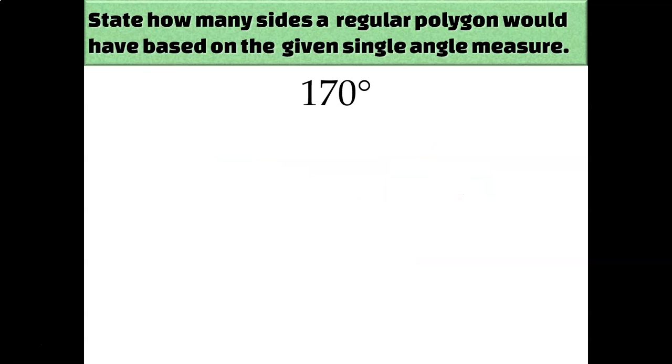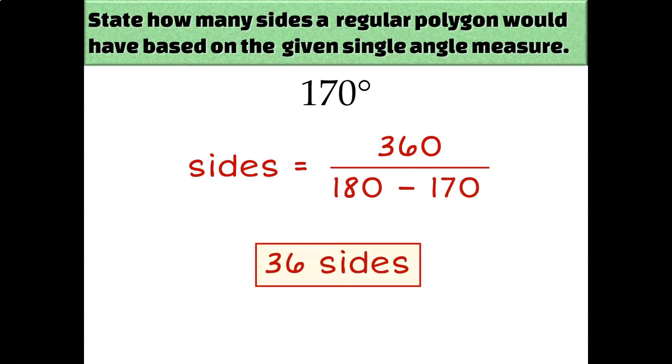What if it was 170 degrees each? Sides equals 360 over 180 minus 170. So that's a really big shape. It's a 36-sided figure.